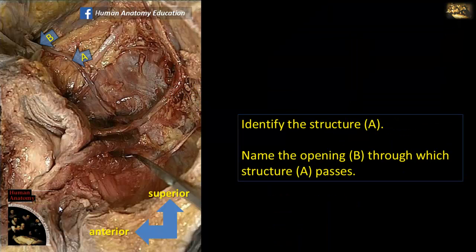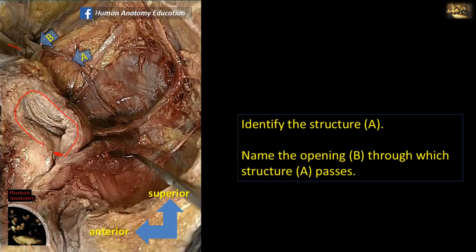Identify structure A and name the opening B through which structure A passes. In this sagittal section of a male pelvis, you can see the urinary bladder and its neck. B is a deficiency in the anterior abdominal wall — that is the deep inguinal ring. Note that the inferior epigastric vessels are just medial to it. Structure A arises from the ring, passes in the lateral wall of the pelvis, then goes medially and distends to form the ampulla of the vas. The ampulla unites with the seminal vesicle, and together they form the ejaculatory duct.